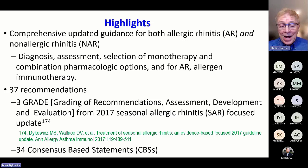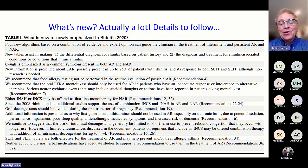Here is a screenshot of the title of the practice parameter. Tons of people were involved with this, and after its development it was vetted by both the academy and the college — a huge group effort. The document is quite comprehensive, updating guidance for both allergic rhinitis and non-allergic rhinitis, going through diagnosis, assessment, selection of treatment options, and placement of allergen immunotherapy. There are 37 recommendations total: three are rigorous GRADE recommendations derived from a 2017 document, and 34 are consensus-based statements.